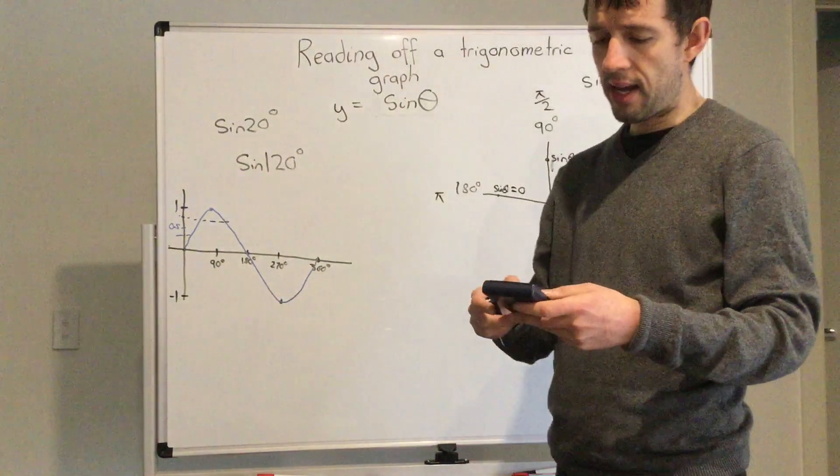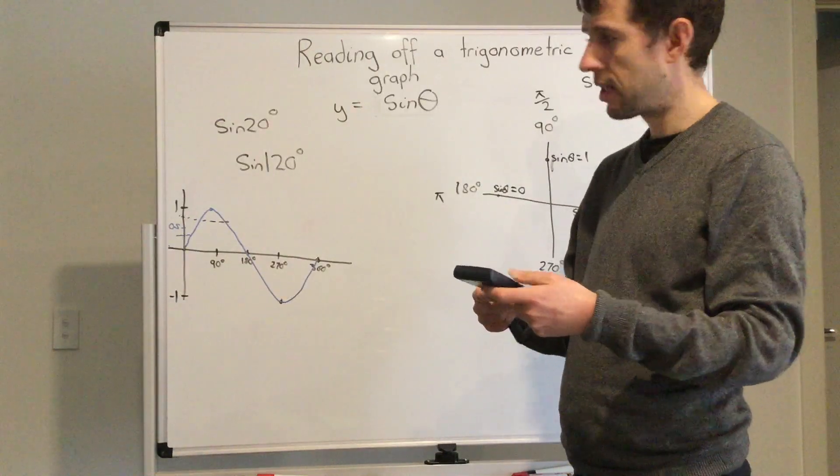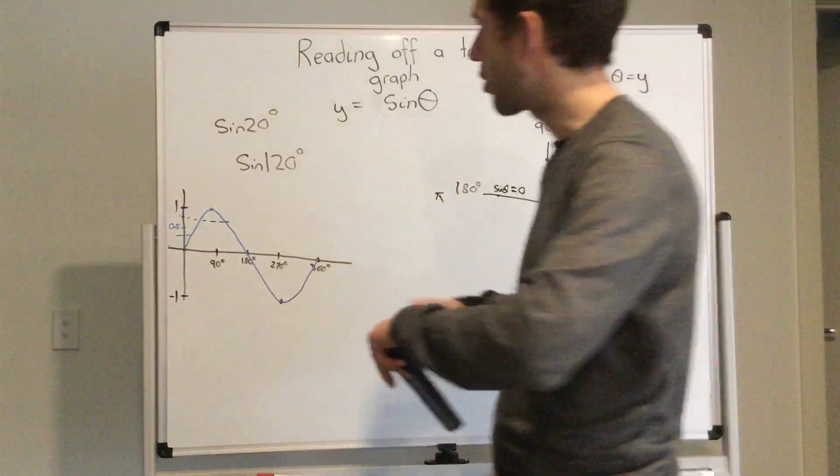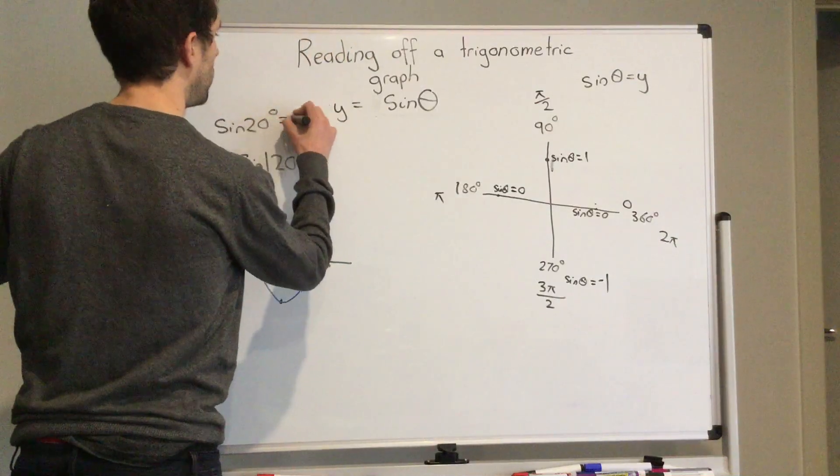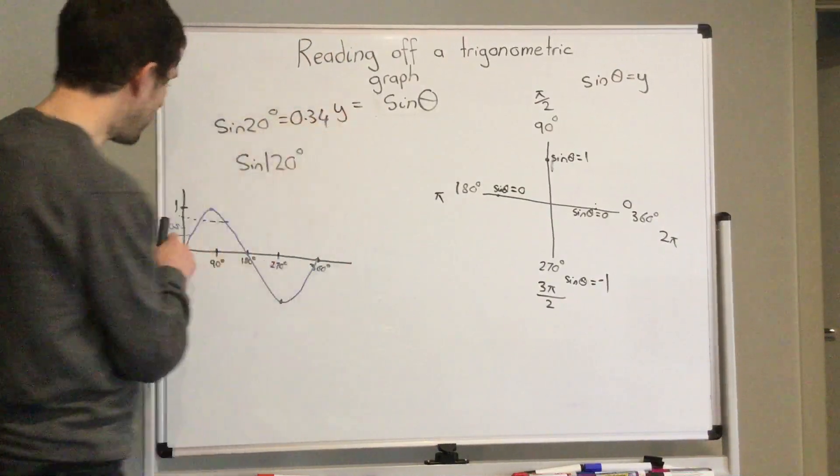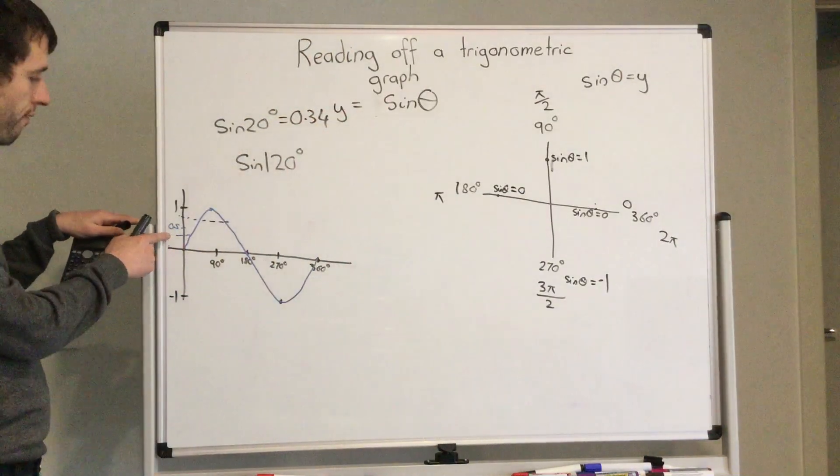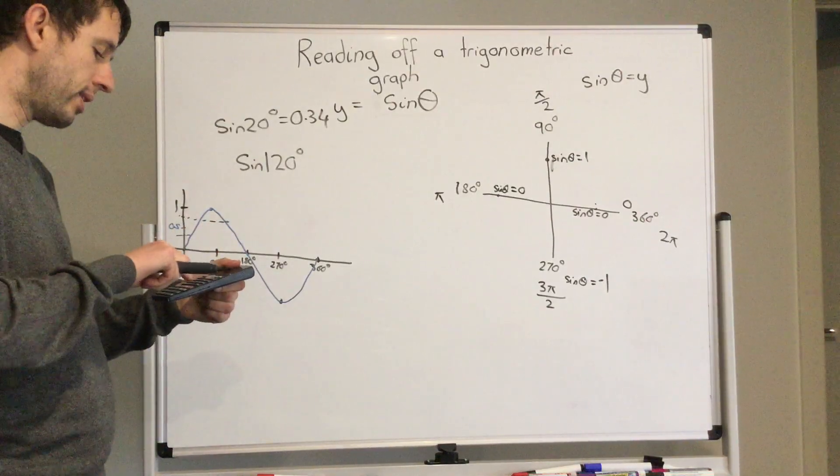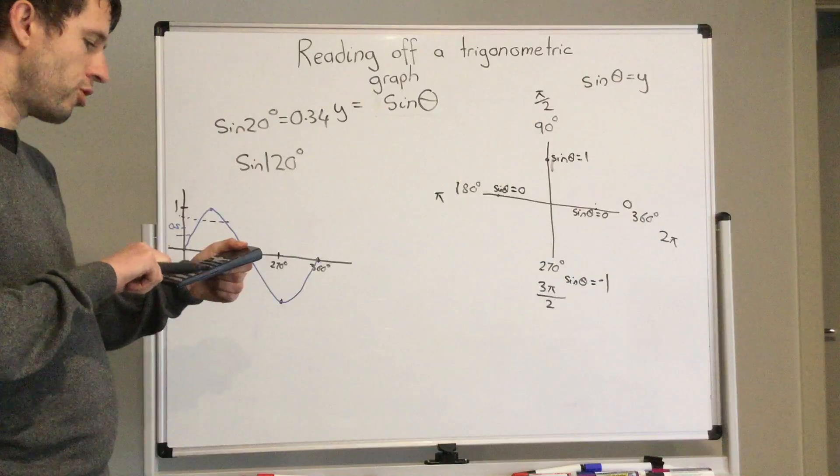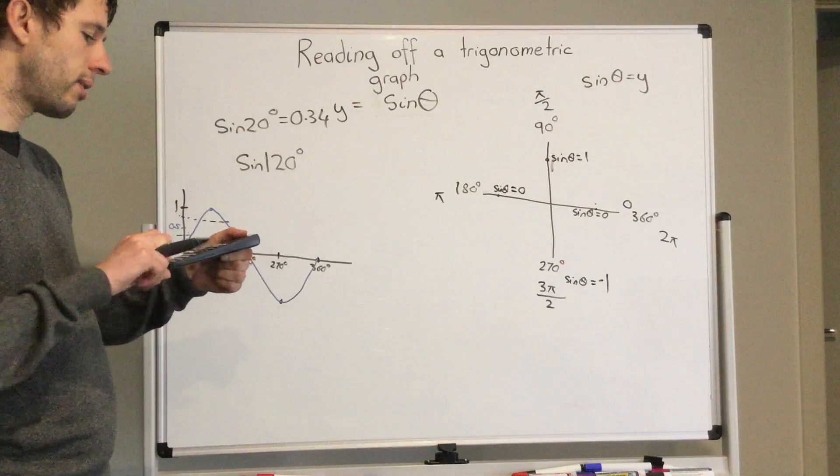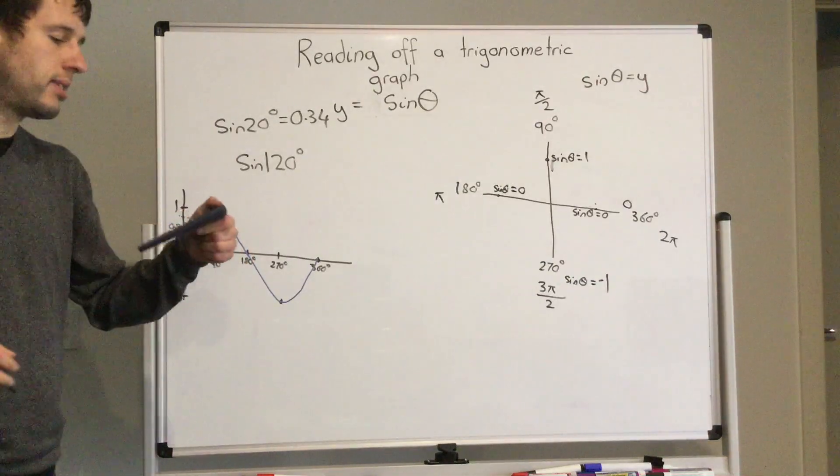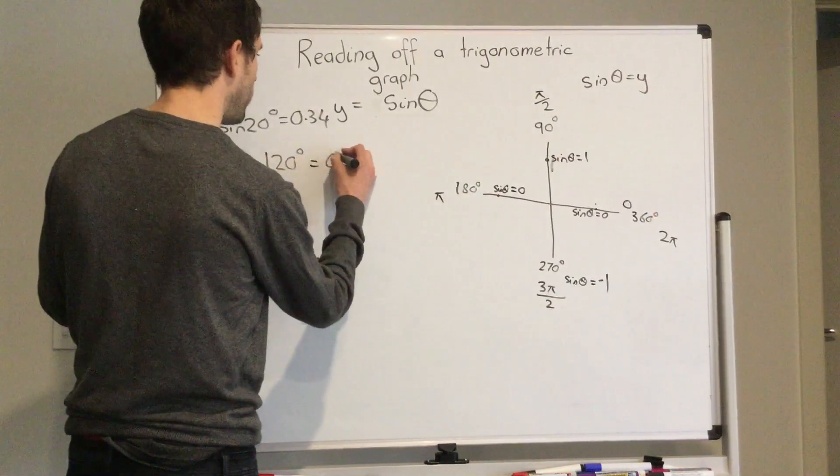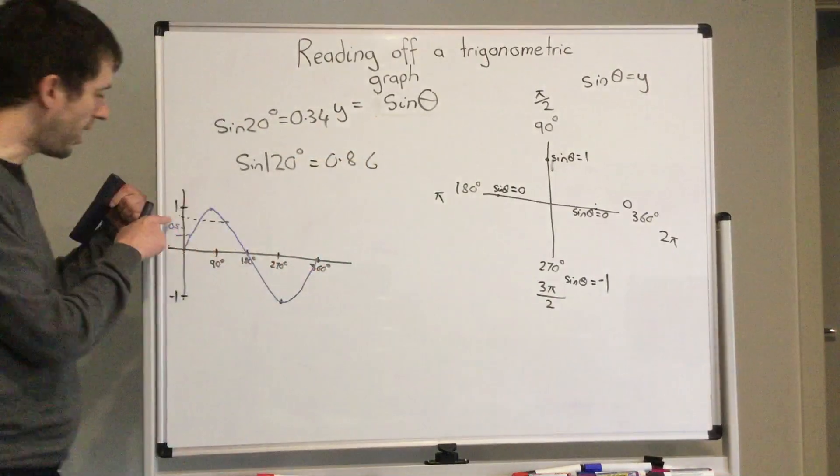So if I type in sine 20 degrees, it equals 0.34, and I did say it's less than 0.5. If I type in sine 120 degrees, it is 0.86.